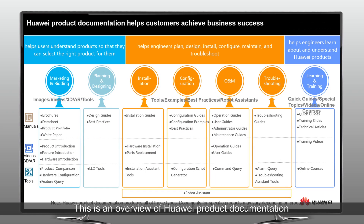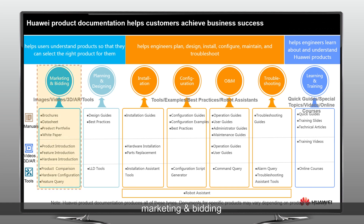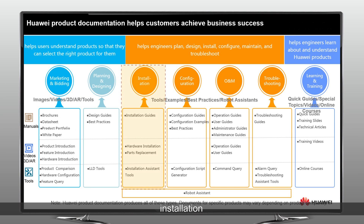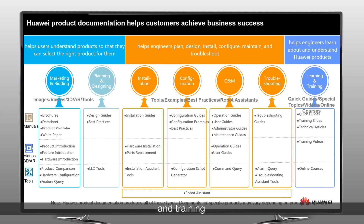This is the overview of Huawei product documentation. Huawei product documentation is designed for seven scenarios: marketing and bidding, planning and designing, installation, configuration, OEM, troubleshooting, and training. For each scenario, there is plenty of different types of documentation.